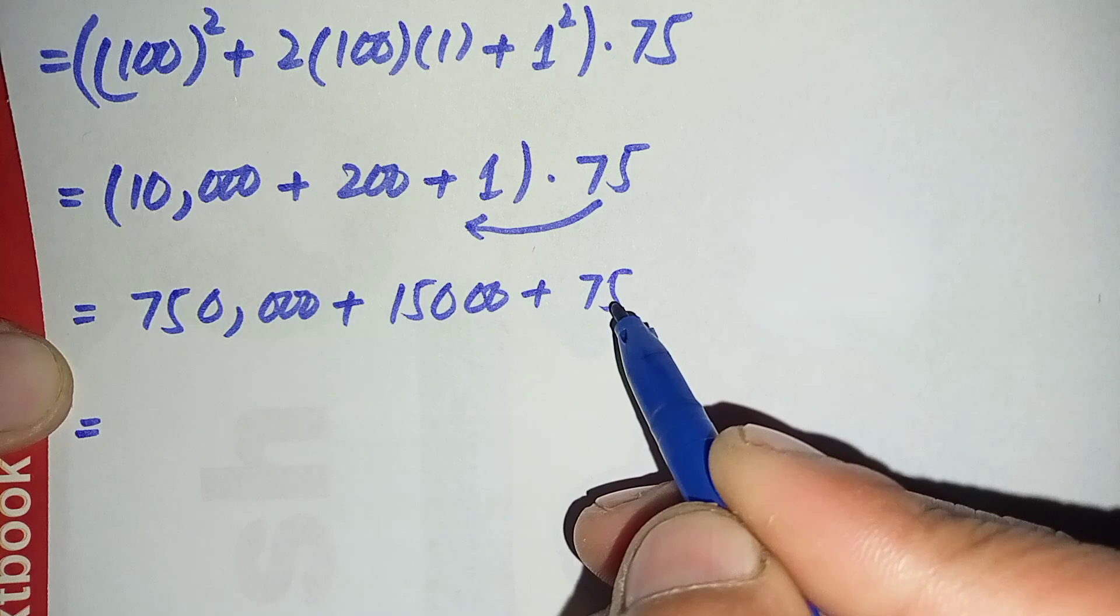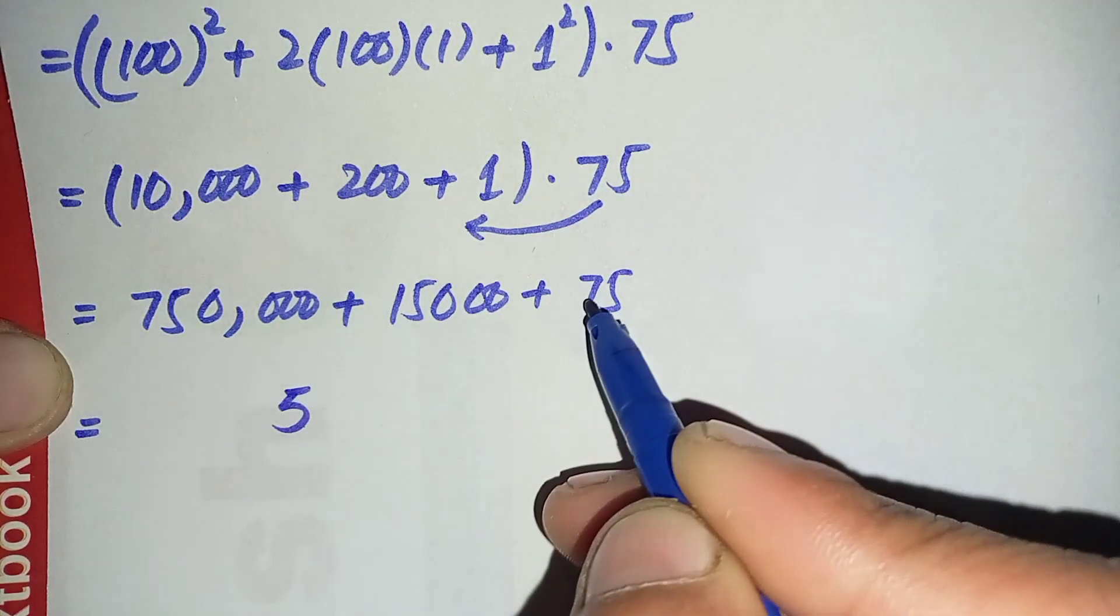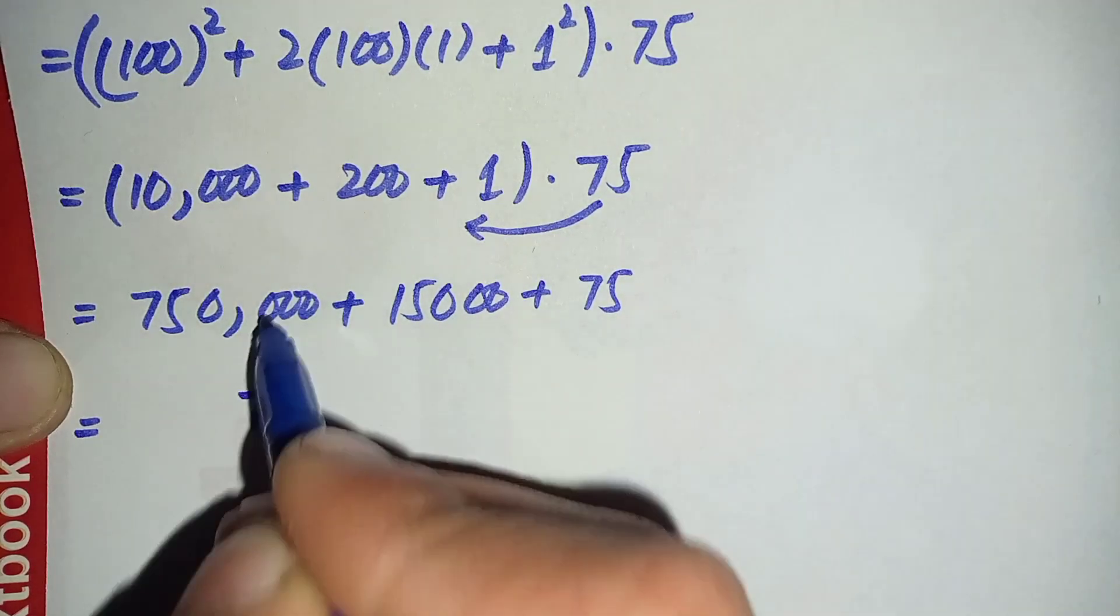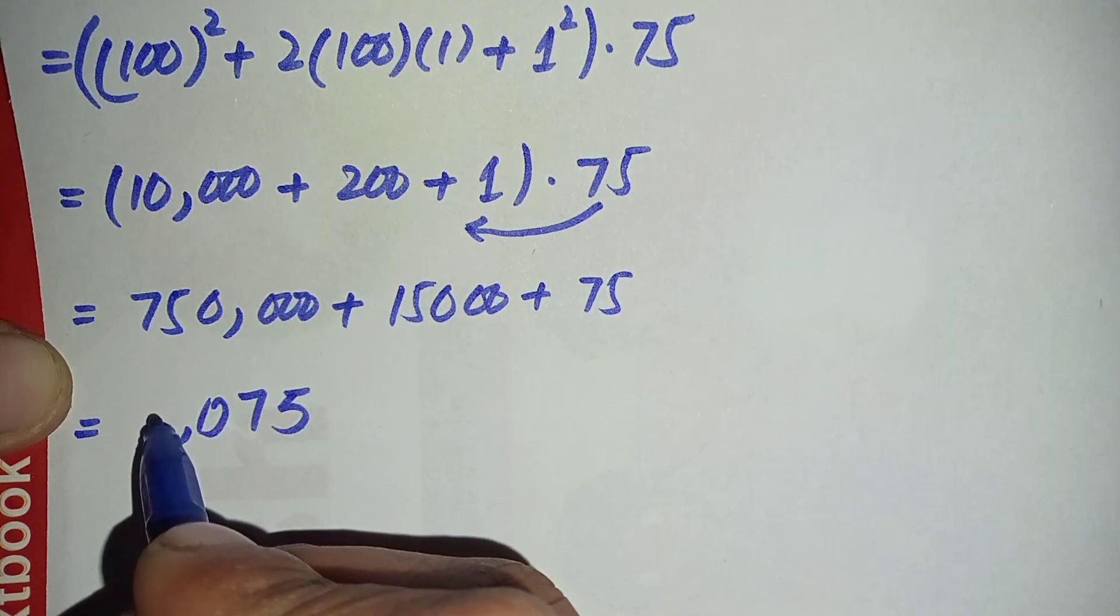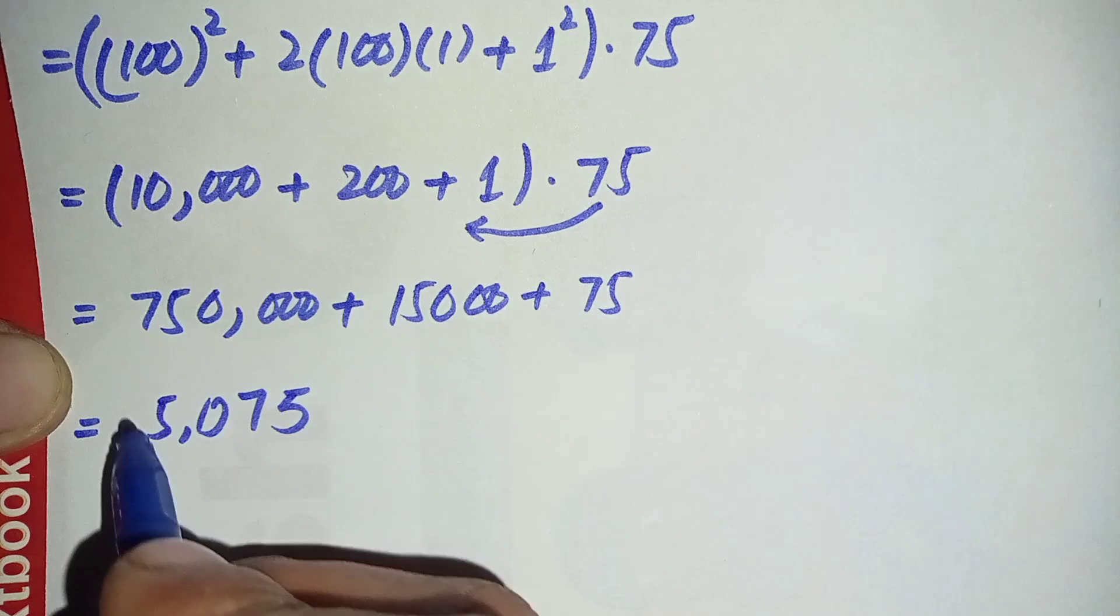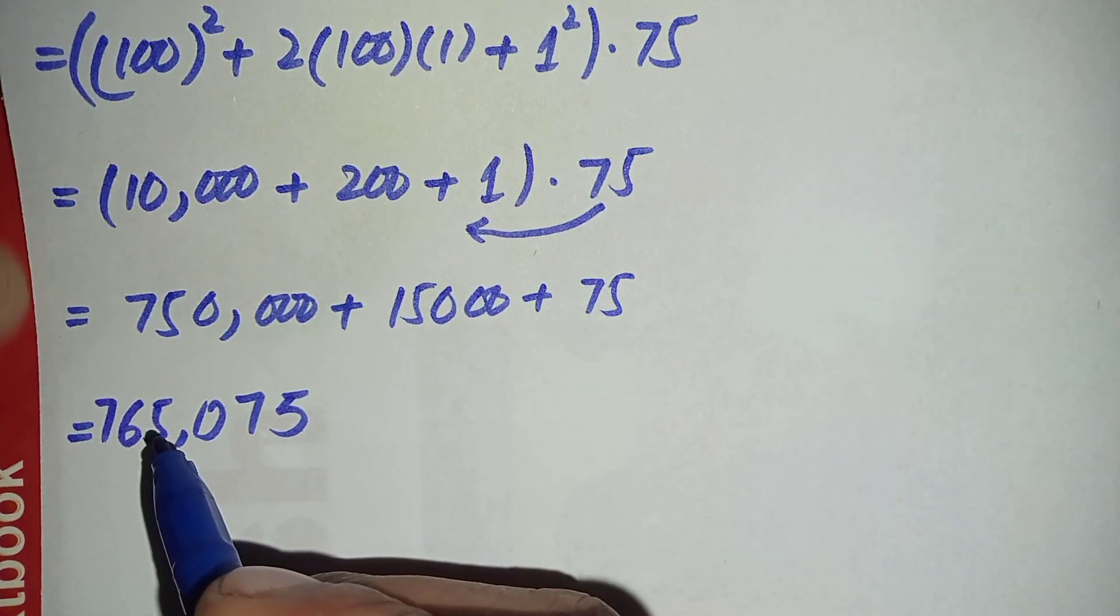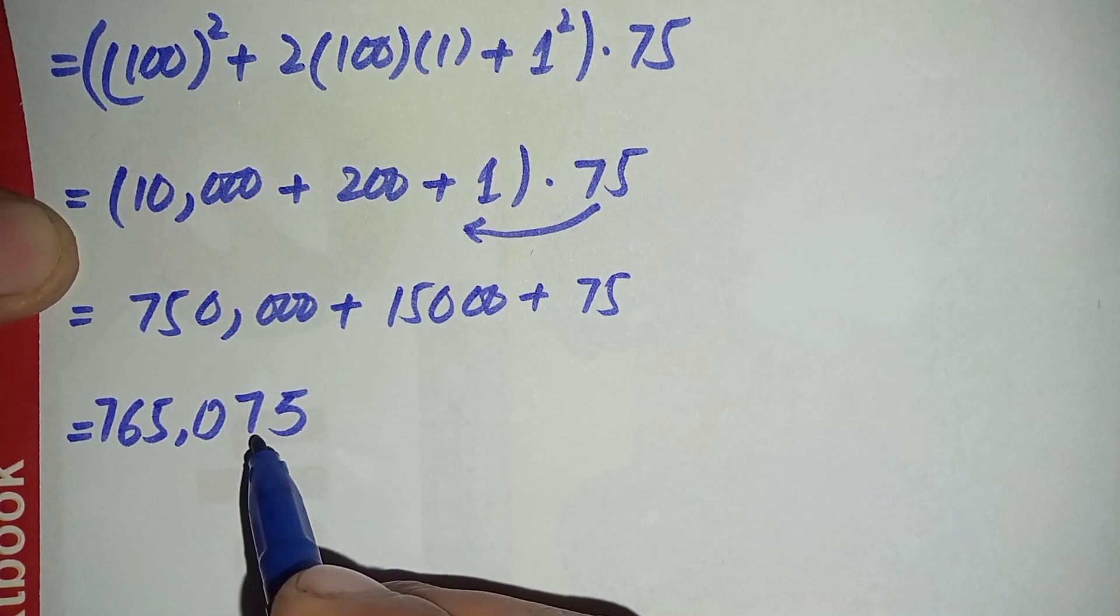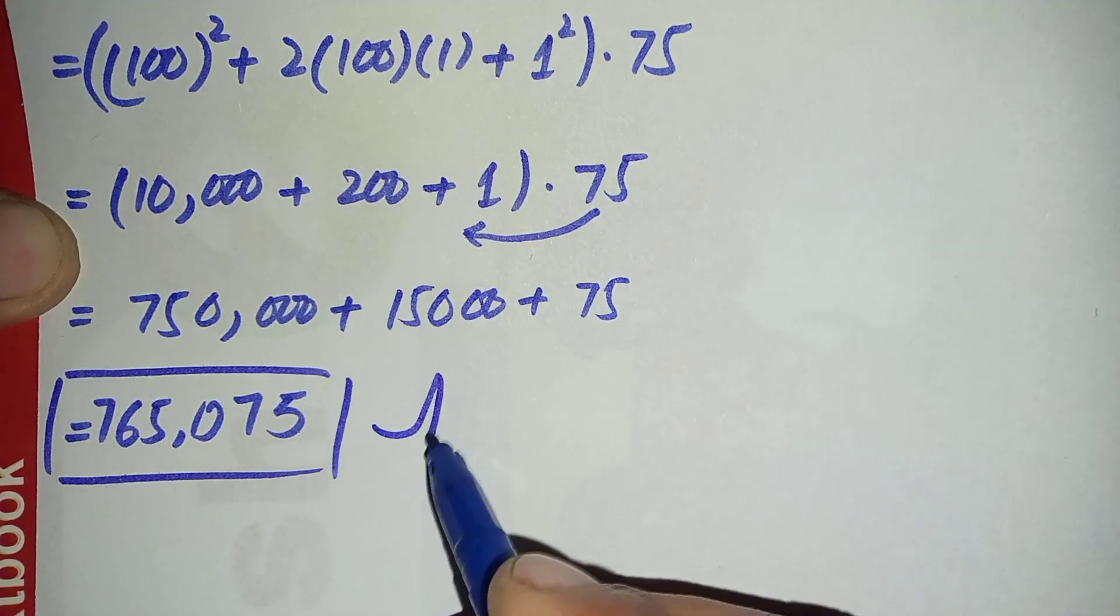Now let us add these three numbers. So it will become: we will start from one's position, 0 plus 0 plus 5 is 5, 0 plus 0 plus 7 is 7, 0 plus 0 plus 0 is 0, 5 plus 5 is 10 carry 1, 1 plus 5 is 6, and 7. So finally 765,075 is the answer and solution of this nice math problem.